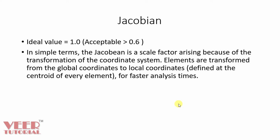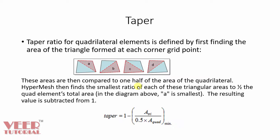Then Jacobian. Jacobian is useful when there is a shift of transformation of coordinate system. So the acceptable value of Jacobian should be greater than 0.6 and the ideal value is 1. Then we have taper. So taper we can find out by going to this formula. You can read it. The taper ratio for quadrilateral element is defined by first finding the area of the triangle formed at each corner. First of all, we will find the area of triangles. And then we will use this formula to calculate the taper value.